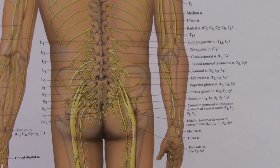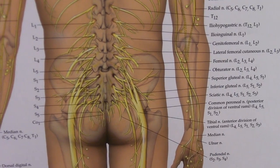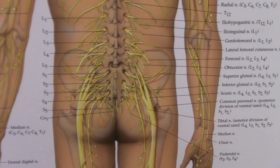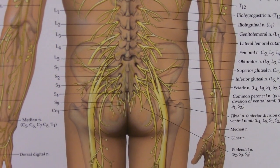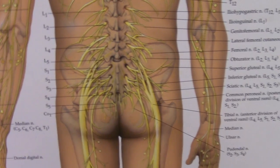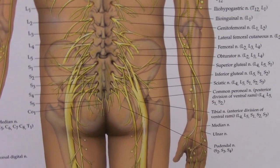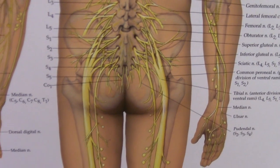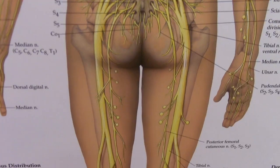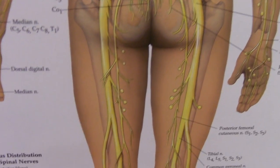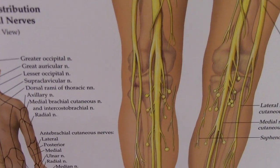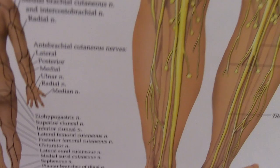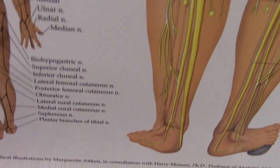As we approach the lumbar spine, we see the lumbar plexus that branches out from either side of the sacrum, and it forms the sciatic nerve, which is the largest nerve in the body, that runs all the way down the back of your leg, down to your calf, and down to the bottom of your foot.